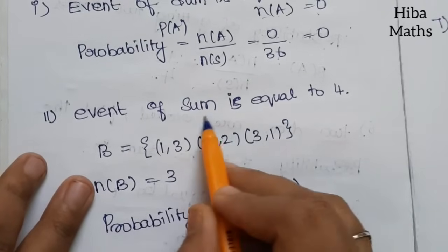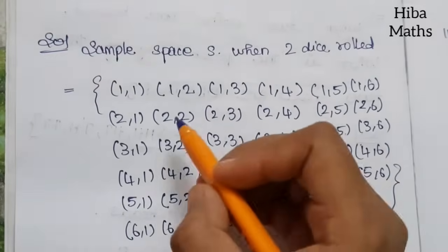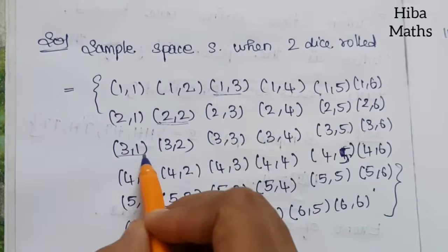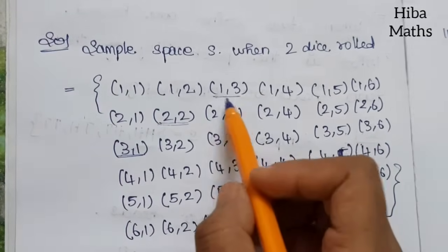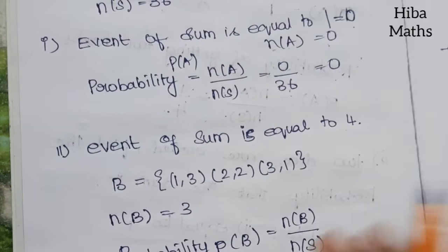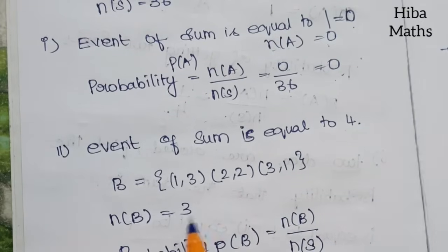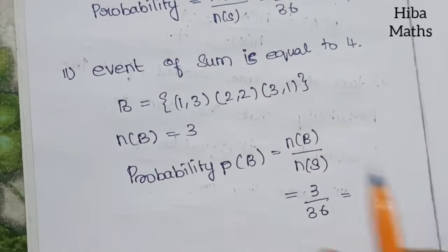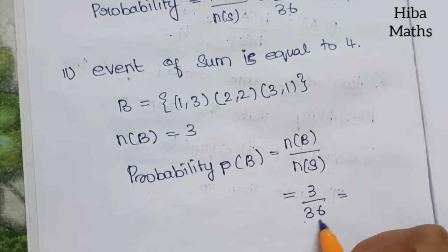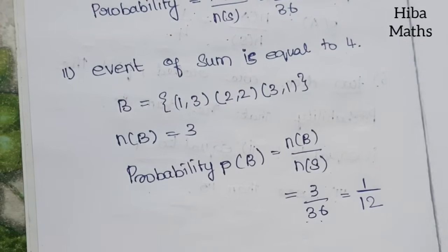Second event: sum equals 4. The combinations are: 1+3, 2+2, and 3+1, so n of B equals 3. Probability P of B equals n of B by n of S equals 3 by 36, which simplifies to 1 by 12.